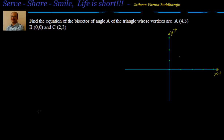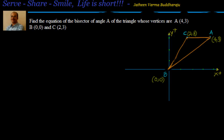We have been given a triangle and we know its vertices are A, B, C. We have to find out the equation of the angular bisector. So let's plot the coordinates A, B, C and form the triangle. We have drawn triangle ABC. What we have to find out is the angular bisector of angle A — let's draw that line and call that point X. We have to find out the equation of AX.